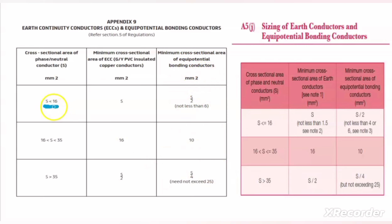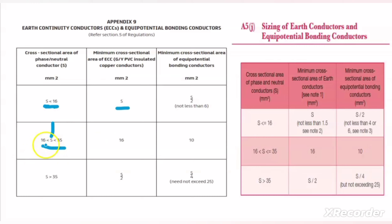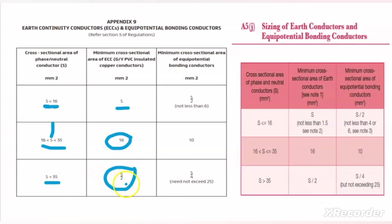DIVA states here: when the phase conductor size is less than 16 mm², then the ECC wire size will be S — meaning equal to the phase conductor size. In the second column, when the phase conductor size is greater than 16 mm² and less than 35 mm², then the ECC size will be 16 mm². And when the phase conductor size is greater than 35 mm², then the ECC size will be S divided by 2.